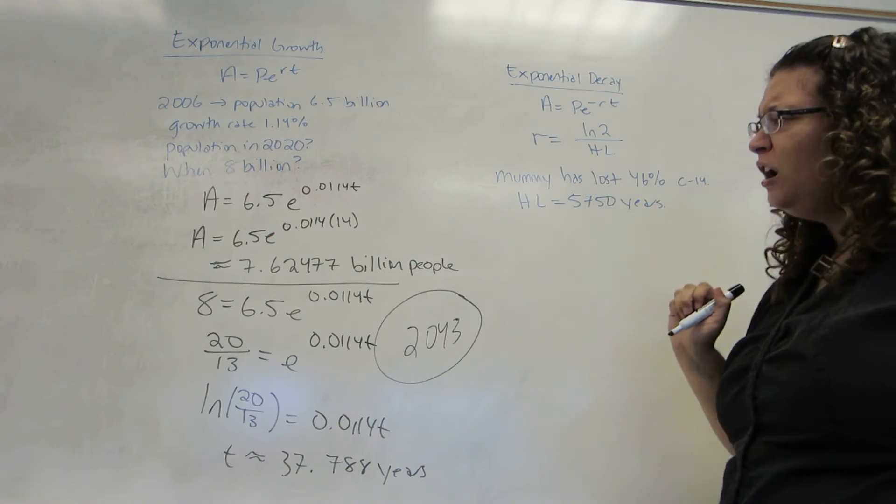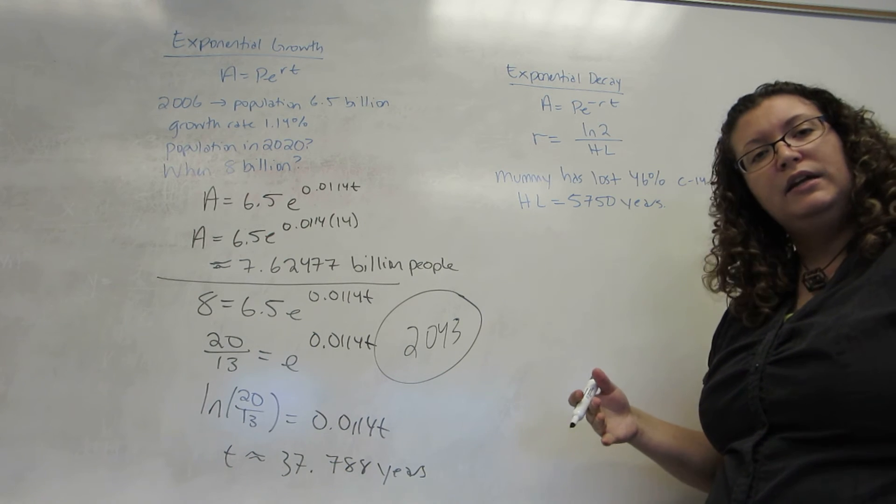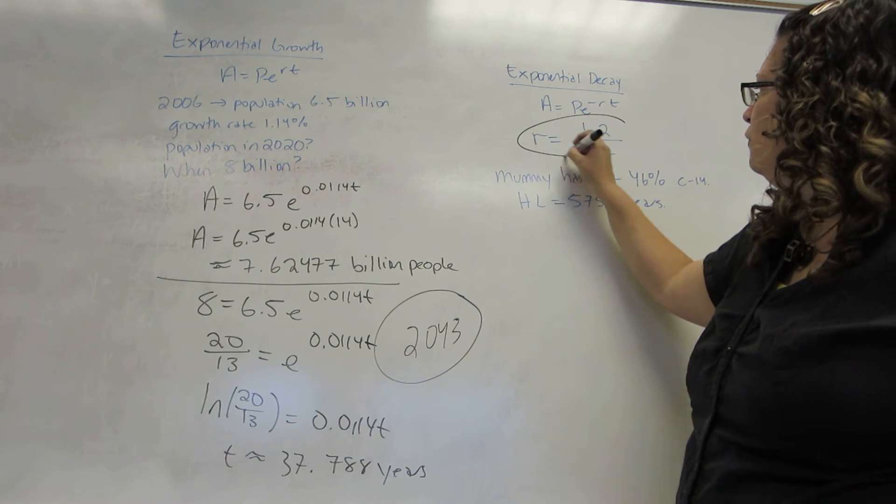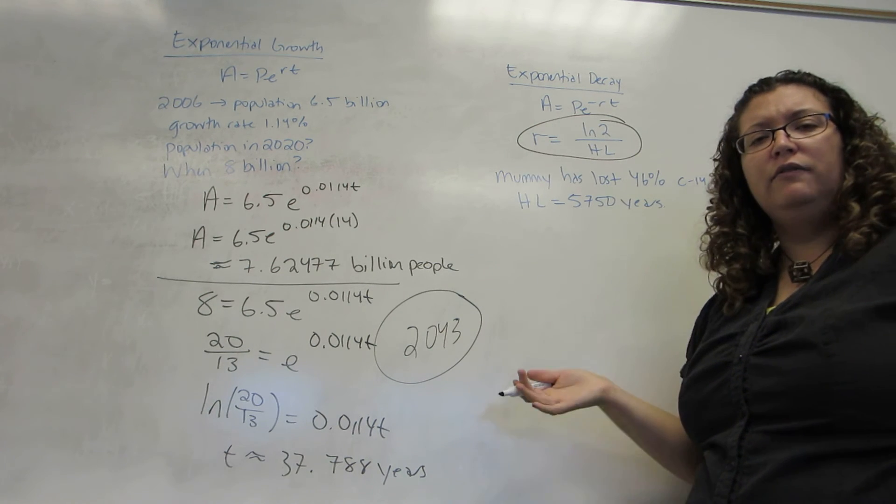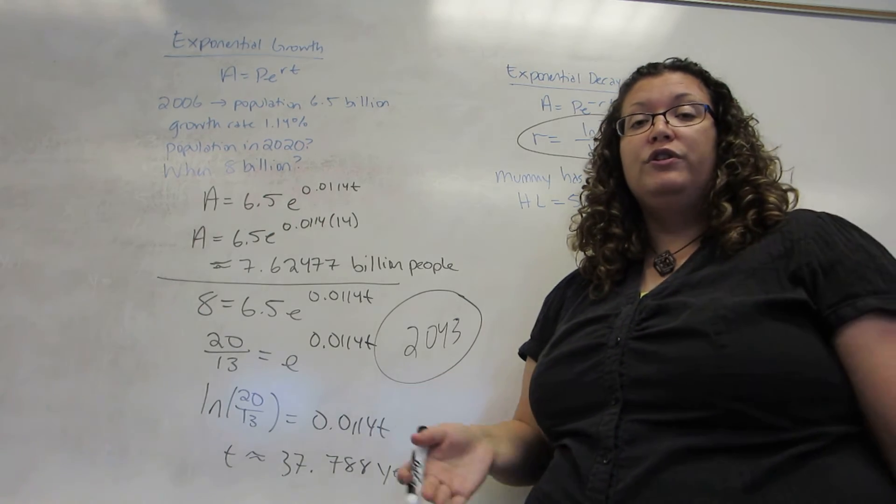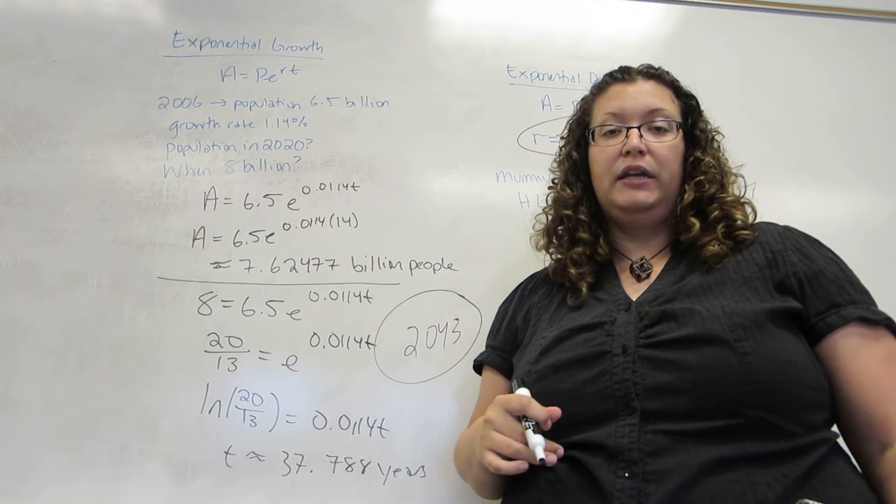Now, the most common example of an exponential decay problem is when you're carbon dating something, or you're looking at any kind of radioactive decay. So, we actually have an additional formula because they don't often give an exponential decay rate. Instead, they give what's called a half-life, which is the time it takes for half of the material in question to decay.